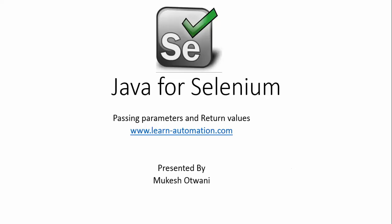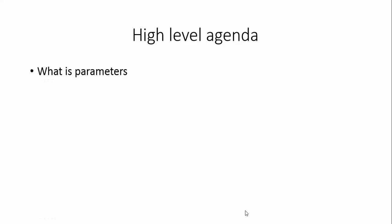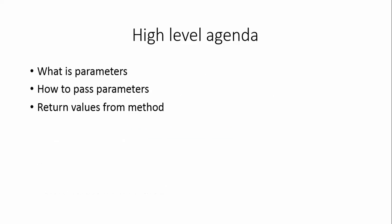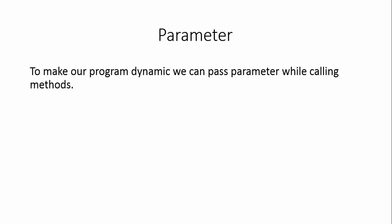Welcome back to another video - Java for Selenium. In this video we'll mainly focus on how to pass parameters and how to return values from methods. If you are really interested in building a healthy framework in Selenium, this topic has to be cleared. In a framework we mainly deal with how we can accept values from different methods and how we can pass parameters dynamically. So let's get started. We'll see what parameters are, how to pass parameters, and how to return values from methods.